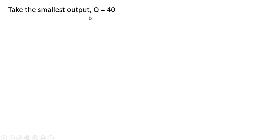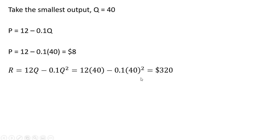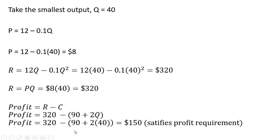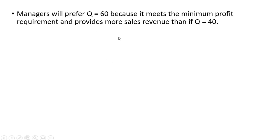If we're to take the smaller value, when Q = 40, we'd get a price of $8, a revenue of $320, and profit would still be $150. So since we get more revenue from the larger output level, and we're trying to maximize sales revenue subject to this profit constraint, we're going to choose the larger output level. So managers will prefer Q = 60 because it meets the minimum profit requirement and provides more sales revenue than if Q = 40. Okay, I'll stop here. Thank you.